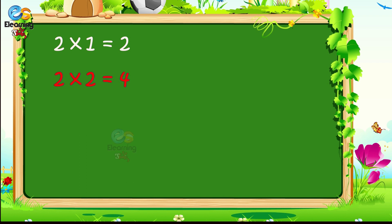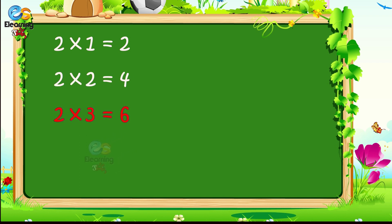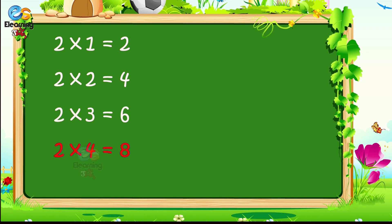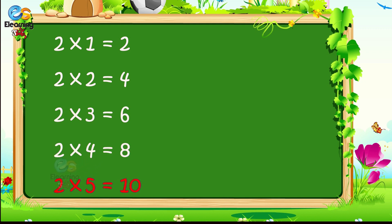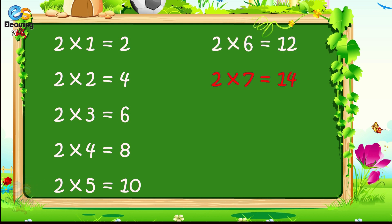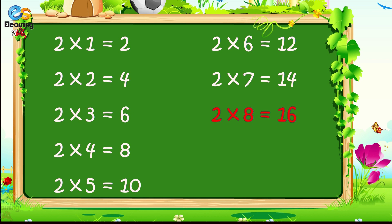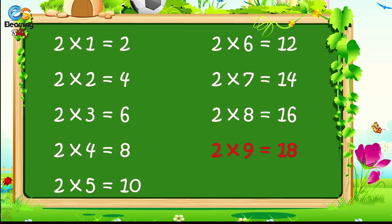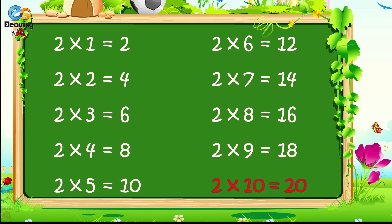2 2s are 4, 2 3s are 6, 2 4s are 8, 2 5s are 10, 2 6s are 12, 2 7s are 14, 2 8s are 16, 2 9s are 18, 2 10s are 20.